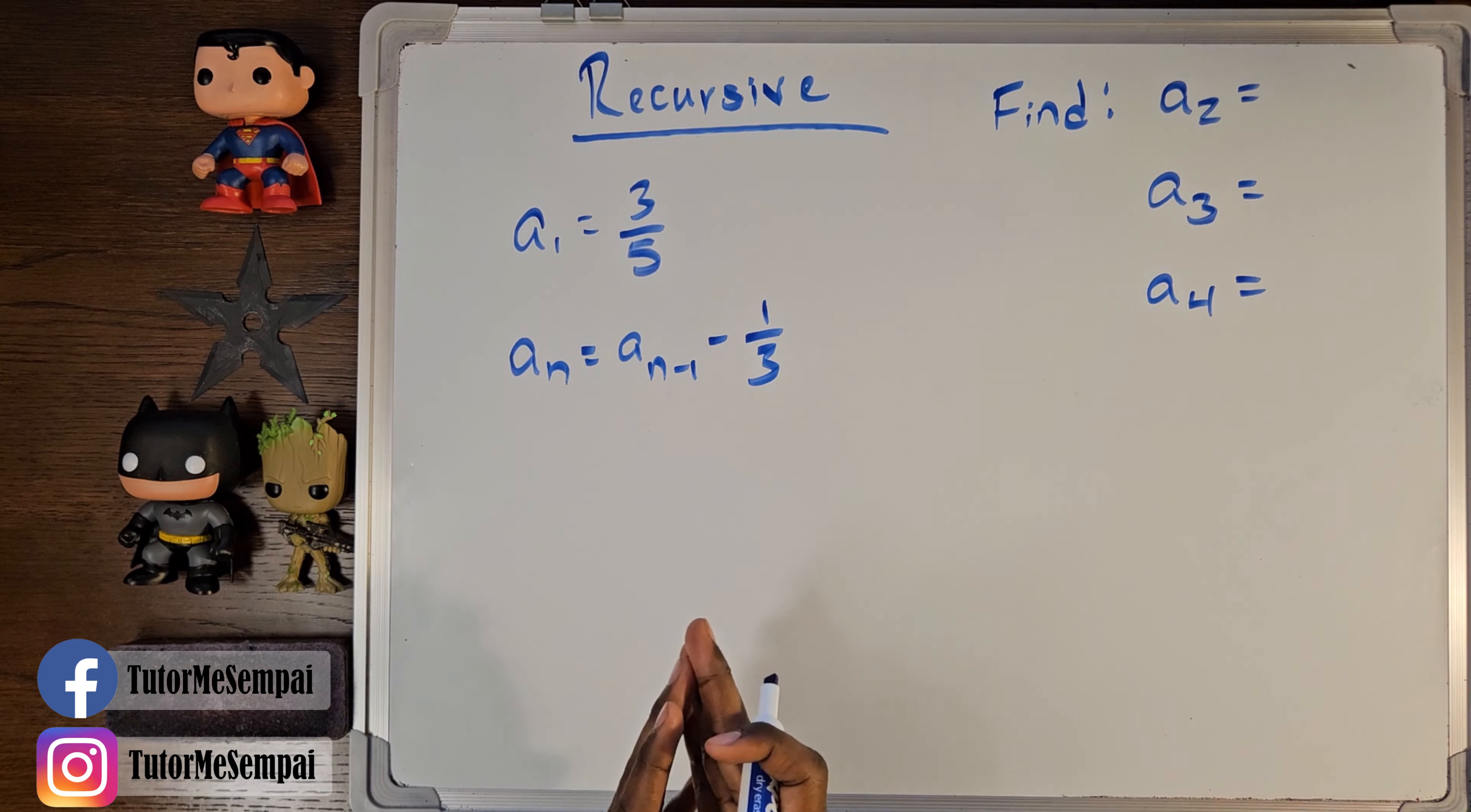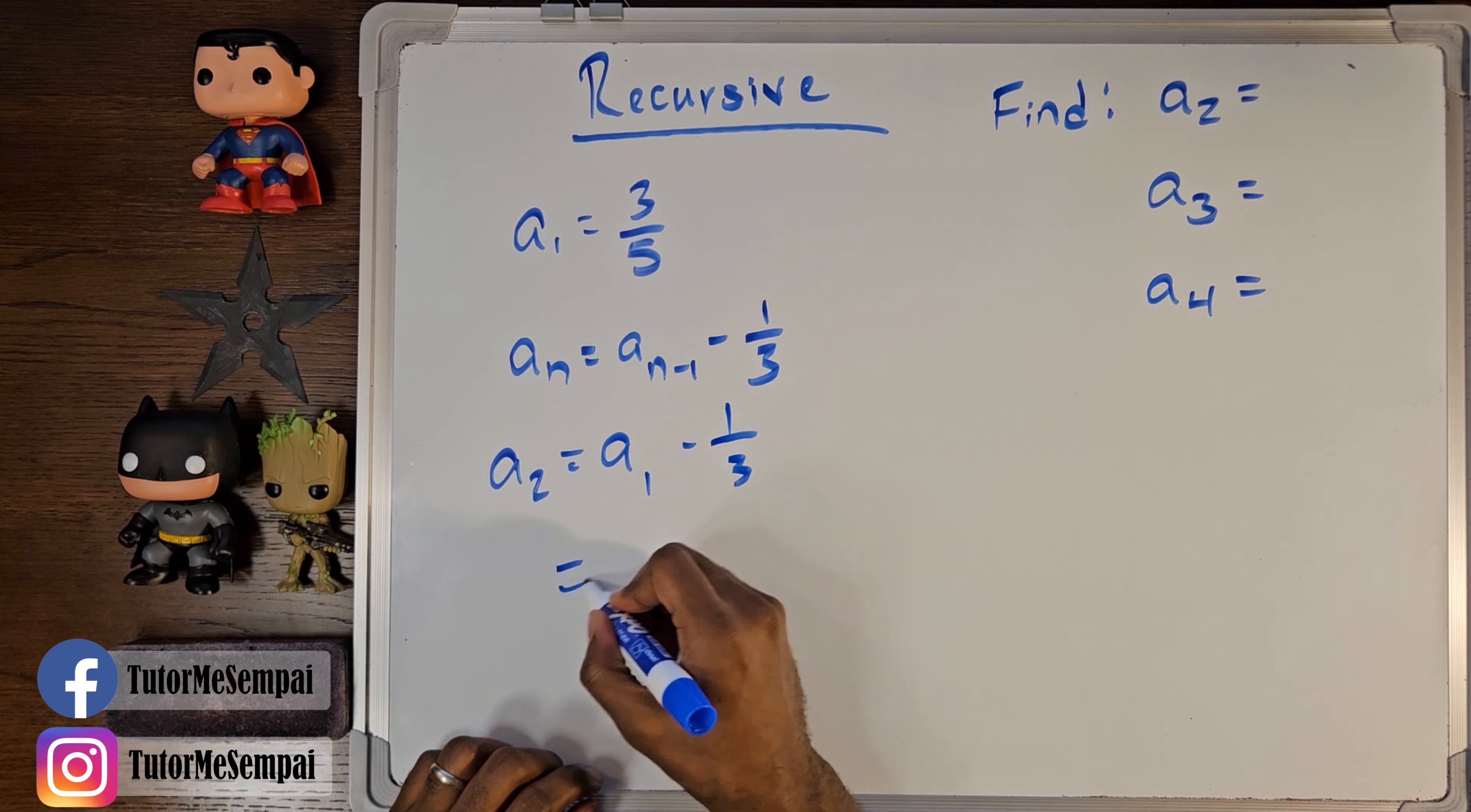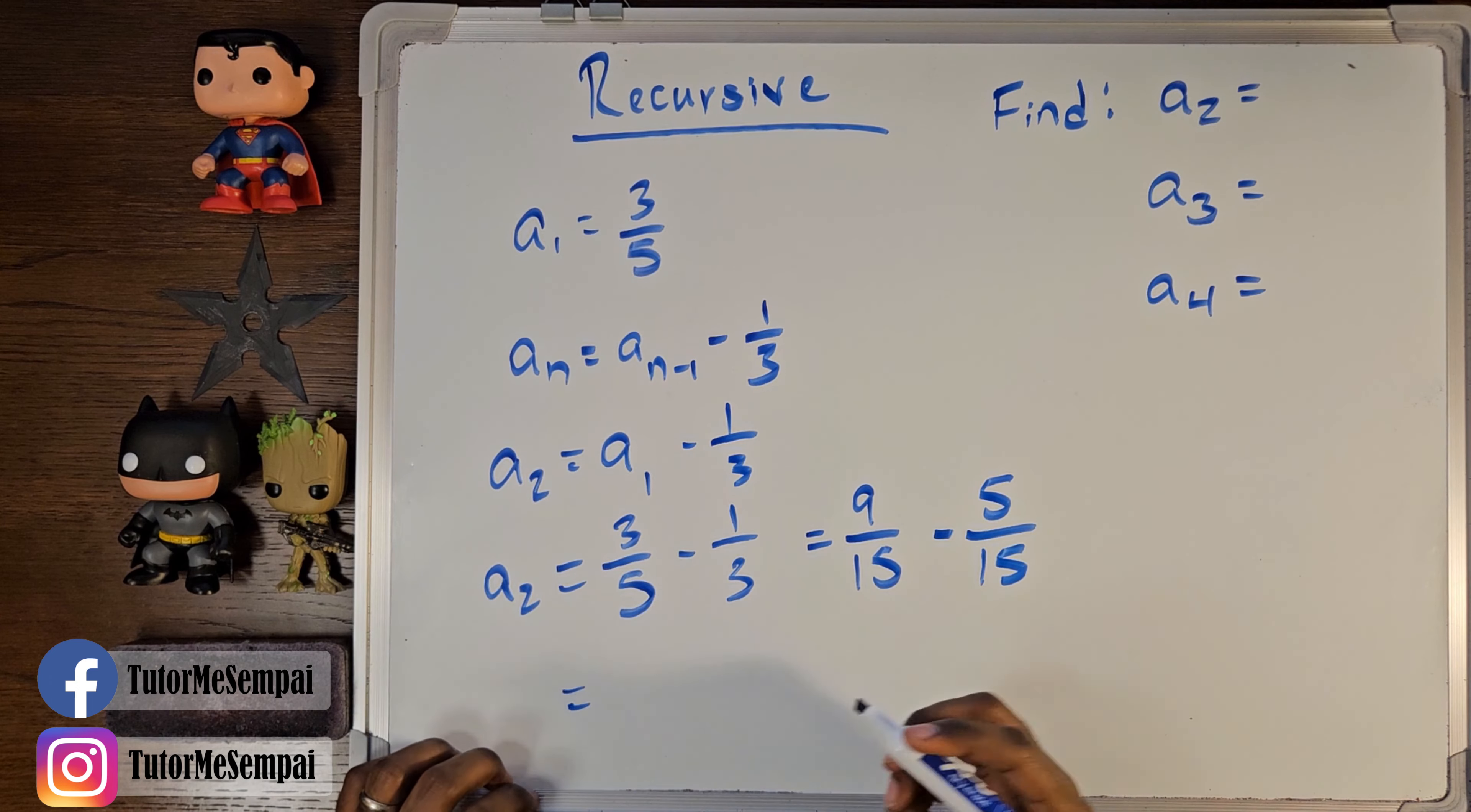We're going to use that to find our a sub 2. So, unlike our explicit, instead of plugging in ones here necessarily, or you can, you can plug in the term that you're looking for, our a sub 2, this doesn't really help us much because we have to substitute what this a sub 1 actually equals. And in this case, our a sub 1, we know to be 3 over 5, minus 1 third, and this is going to be what our a sub 2 should be. And of course, you can rewrite this as 9 over 15, minus 5 over 15, which gives you a final result of 4 over 15.